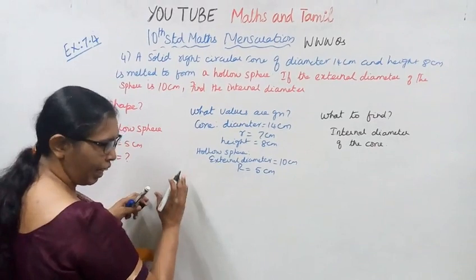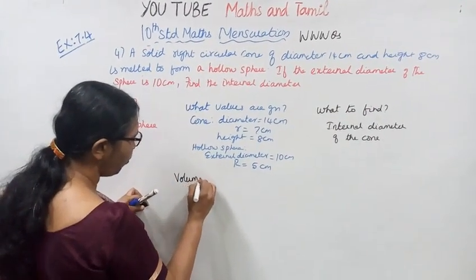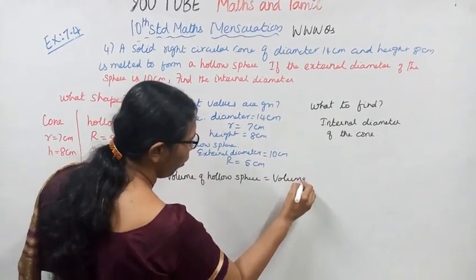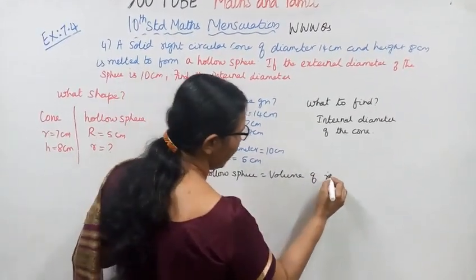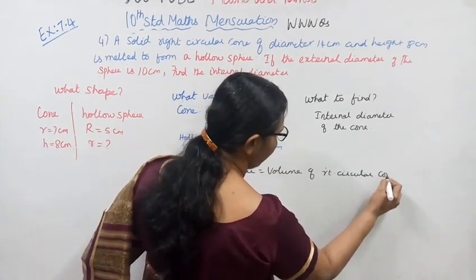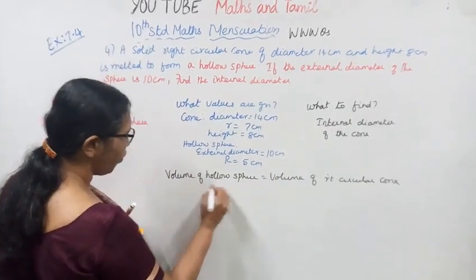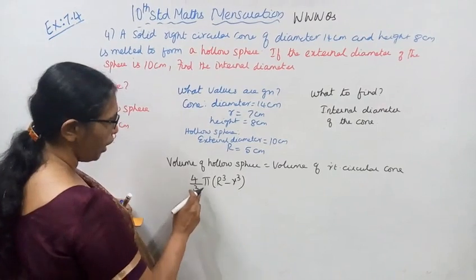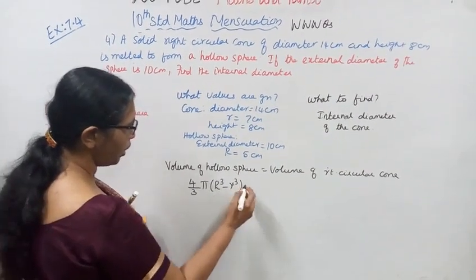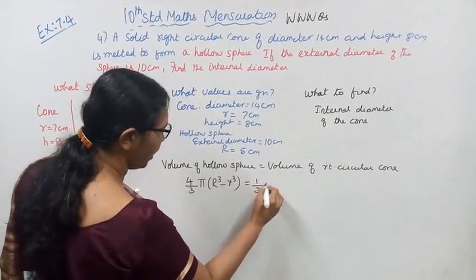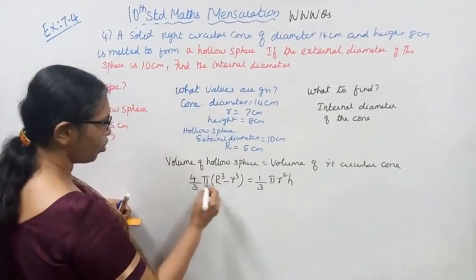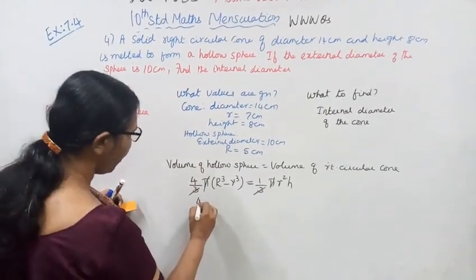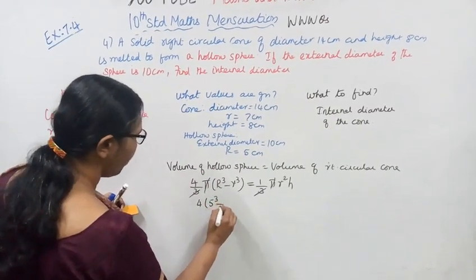Volume of hollow sphere equals volume of right circular cone. Volume of hollow sphere formula: 4/3 π (R³ − r³). Volume of cone formula: 1/3 π r² h. After cancellation, 4 into capital R cube minus small r cube remains on the left side.